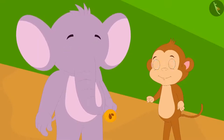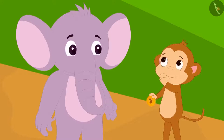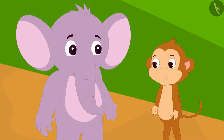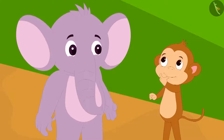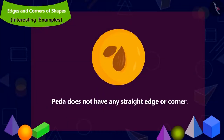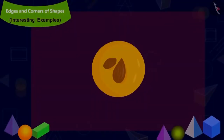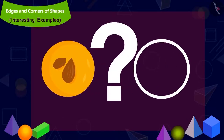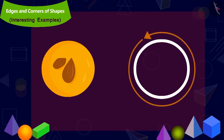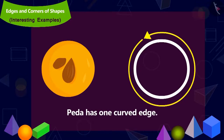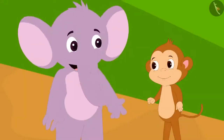Now Appu had understood Babban's trick. This time he gave Babban a pera. Babban was confident that this time too he would answer correctly, so he quickly ate the pera. Then Babban answered that a pera has no corners and no edges. But is that correct? A pera has a curved edge — and no corner. So Babban's answer about the edges was wrong. Appu explained the correct answer and took money for the pera from Babban.